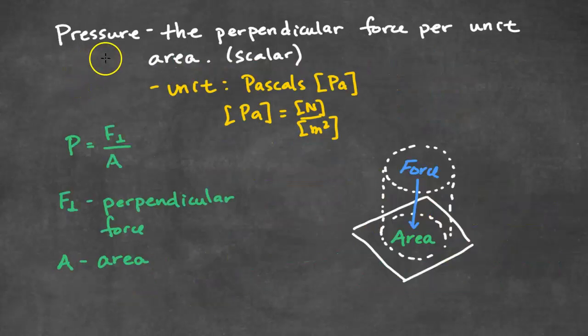Pressure is the perpendicular force per unit area. Pressure is a scalar. It means that it just has a magnitude. There's no direction. The unit for pressure is Pascals. A Pascal is equal to a newton per meter squared. And that makes sense because the equation for pressure is P equal to the force perpendicular divided by the area. And the unit for force is newtons. And the area is meters squared.